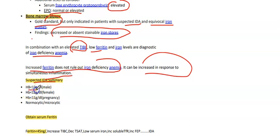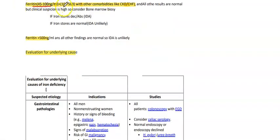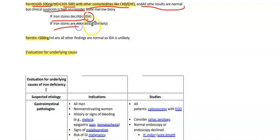Summary of suspected IDA diagnostic algorithm: Hb less than 13 in males, less than 12 in females, less than 11 in pregnancy, with finding of microcytosis on CBC. Check serum ferritin: if less than 45 with increased TIBC, decreased transferrin saturation, low serum iron, increased soluble transferrin receptors, and increased free erythropoietin — diagnosis is IDA. If ferritin is 45 to 100, or 101 to 500 with comorbidities like chronic kidney disease or congestive heart failure, and all other results are normal but clinical suspicion is high, consider bone marrow biopsy. If iron stores are decreased or absent, IDA is most likely; if iron stores are normal, IDA is unlikely. If ferritin is greater than 500 and all other findings are normal, IDA is unlikely.